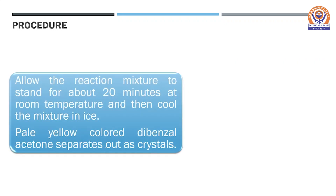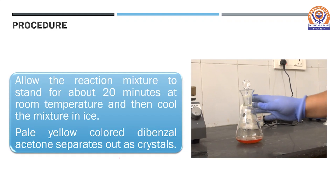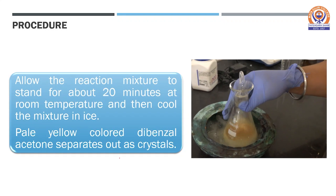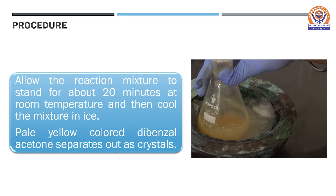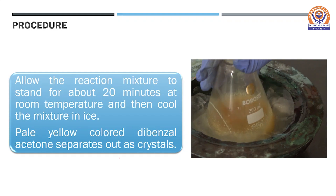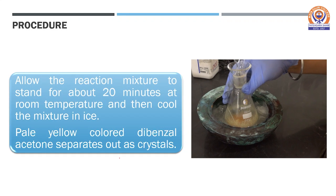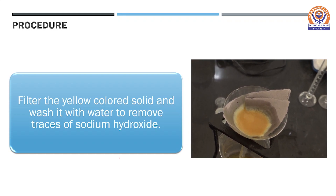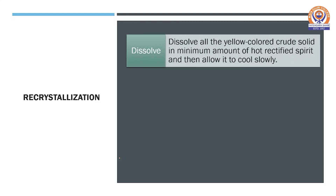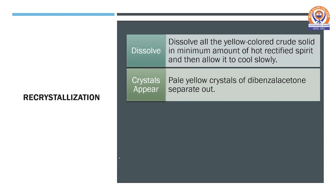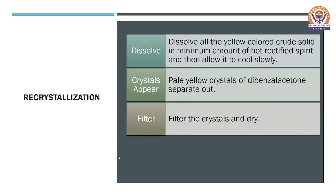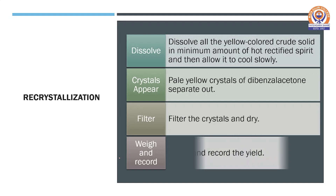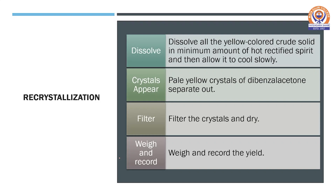After shaking is complete, allow the reaction mixture to stand for about 20 minutes at room temperature, then cool the mixture in ice taken in a water bath. Pale yellow colored dibenzyl acetone separates out as crystals, as shown in this video. Filter the yellow colored solid and wash it with water to remove traces of sodium hydroxide. The obtained product is crude and may be recrystallized by dissolving it in a minimum amount of hot rectified spirit and allowing it to cool slowly, whereupon pale yellow crystals of dibenzyl acetone start separating out. Filter these, dry in the folds of the filter paper, and weigh and record the yield.